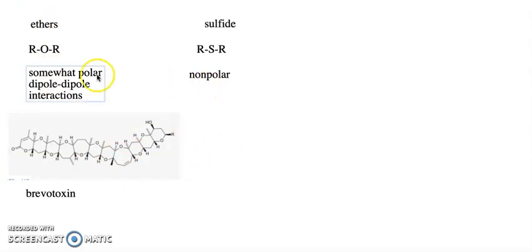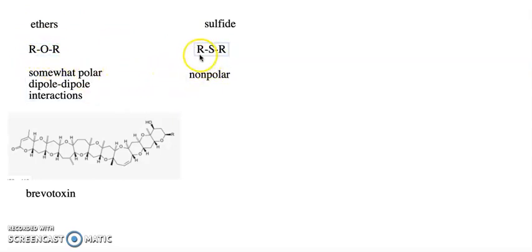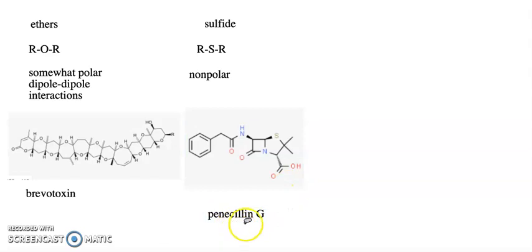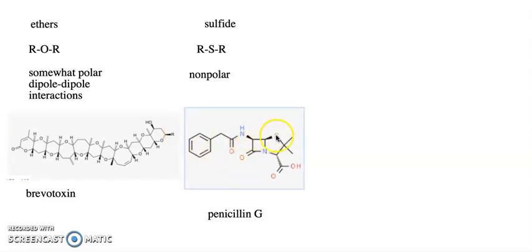Similar to ethers are sulfides, which have R-S-R instead of R-O-R, but they tend to be more nonpolar than ethers. Sulfur is less electronegative than oxygen, so the carbon-sulfur bond is less polarized. An important example is penicillin G, which has many other functional groups in it besides the sulfide, but that's the one we're focusing on.